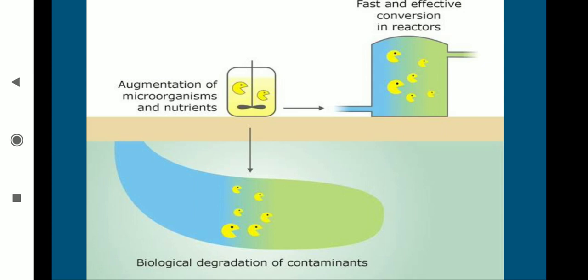This image shows how bioaugmentation works. For example, suppose there is an industry nearby to a river. All the waste or pollutants from this industry are let out into the river. Microbes or bacteria present in the river help in converting complex substances into simpler substances — that is, they help in the decomposition of the pollutant.